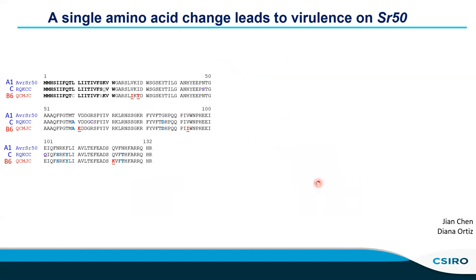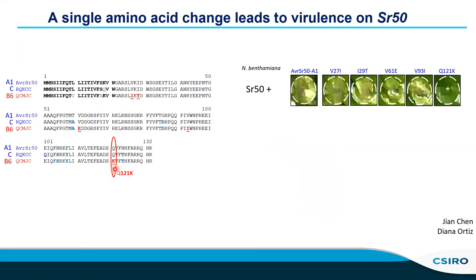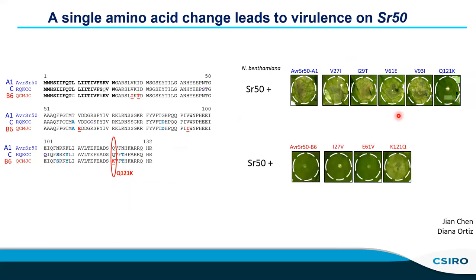We wanted to understand the nature of those amino acid changes and how they control recognition. Looking at the sequences of those three isolates, the amino acid variants unique to the virulence allele are highlighted. We tested each of those mutations by incorporating them individually into the avirulence allele, and it turns out just one variant controls recognition: a single change of glutamine (Q) at position 121 to lysine (K) results in loss of recognition by SR50. Performing the inverse experiment — reverting that position in the virulence allele back to the wild-type — restores recognition. That single residue is critical for determining whether these proteins are recognized.